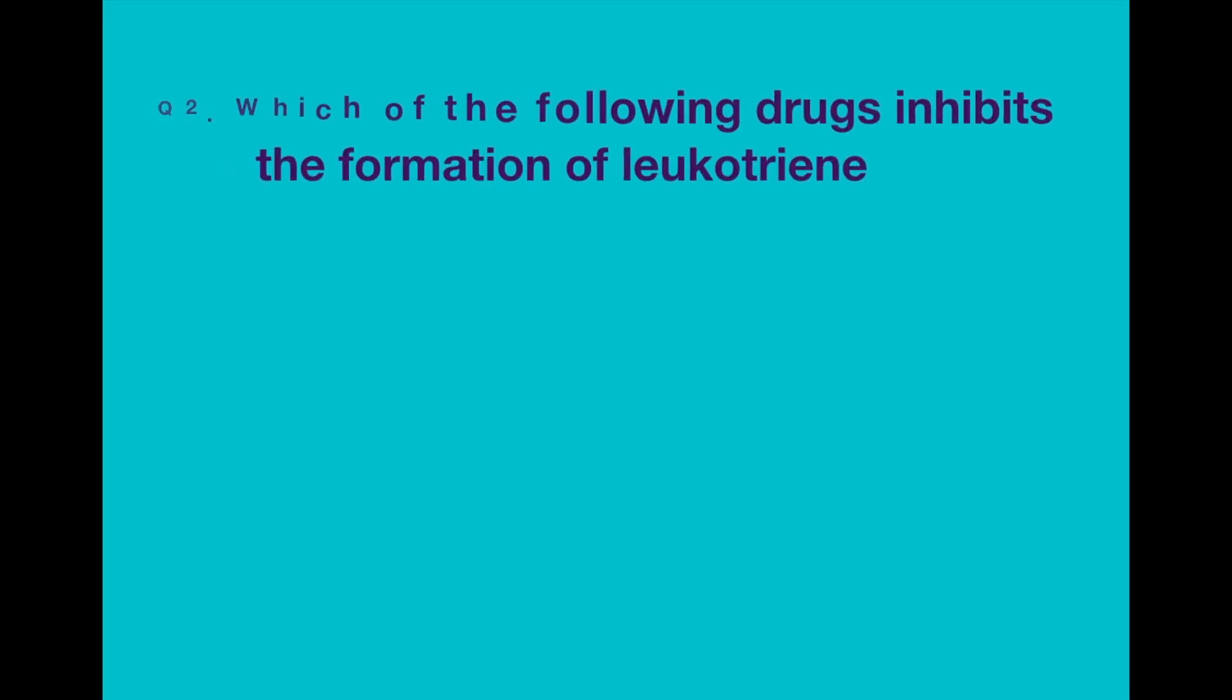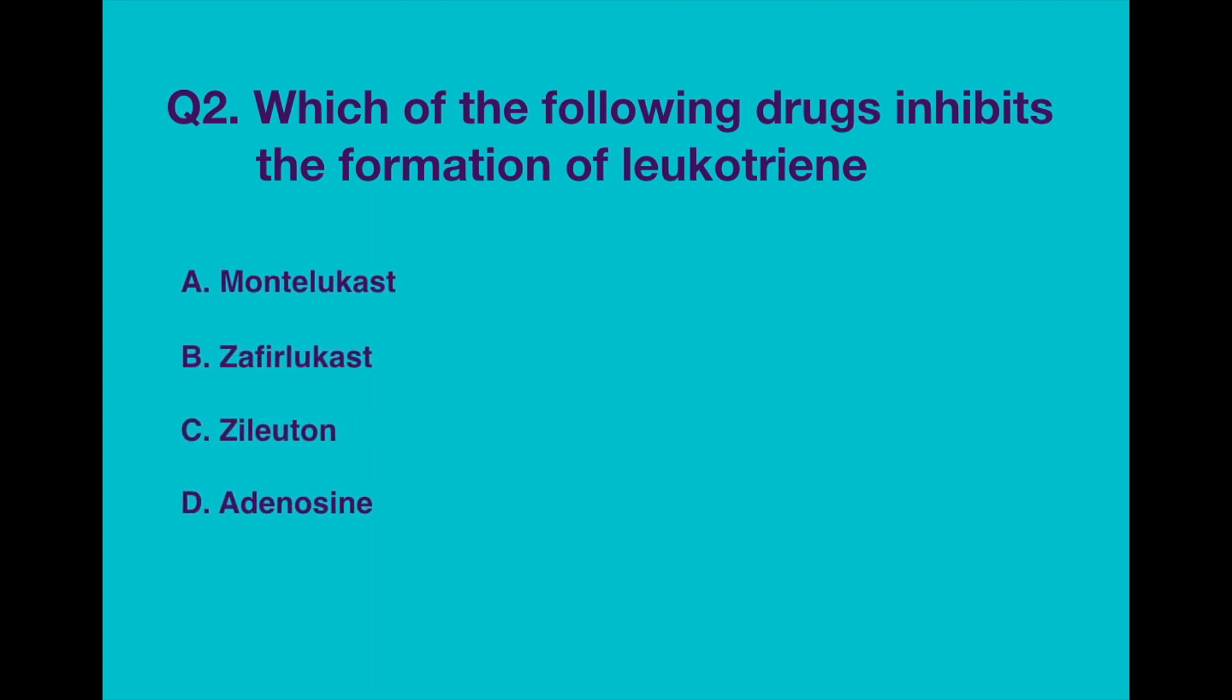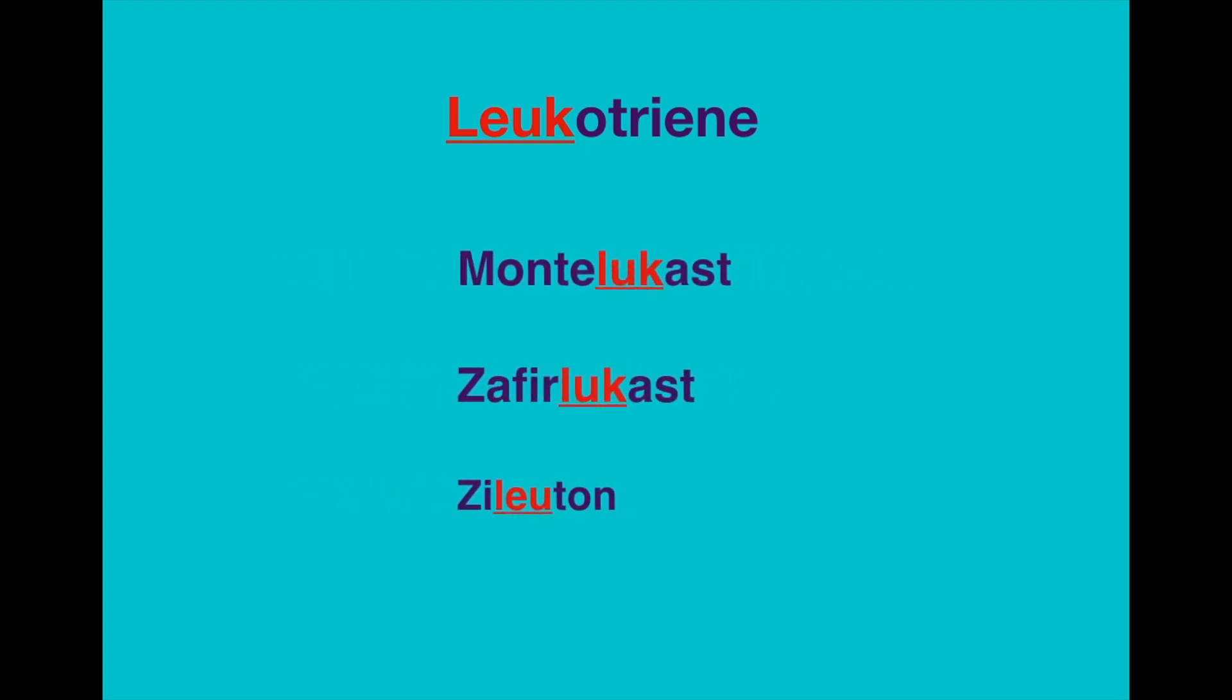Question number two. Which of the following drugs inhibits the formation of leukotriene? Option A: Montelukast. Option B: Zafirlukast. Option C: Zileuton. Option D: Adenosine. The correct answer is Zileuton. So when you hear leukotriene, you should always think of Montelukast, Zafirlukast, and Zileuton.